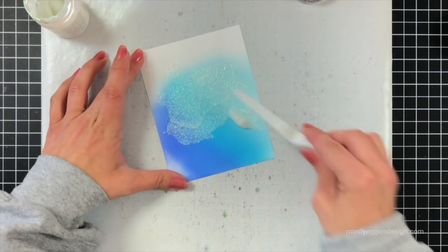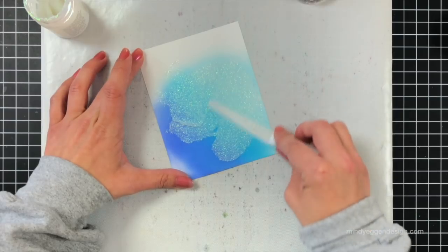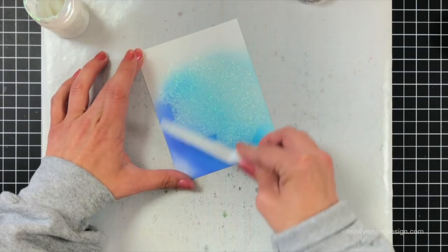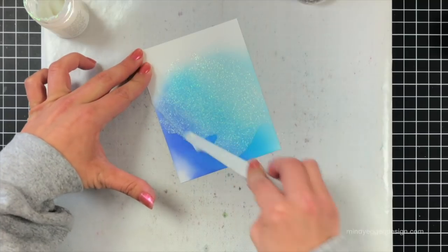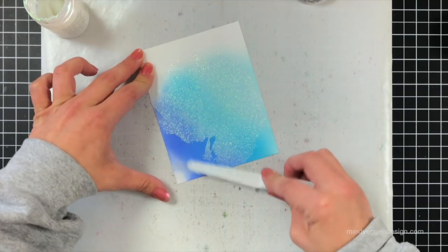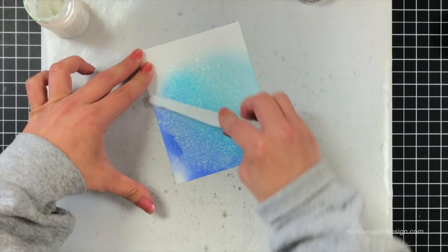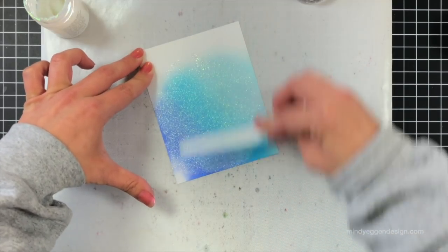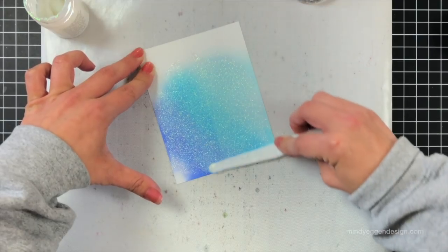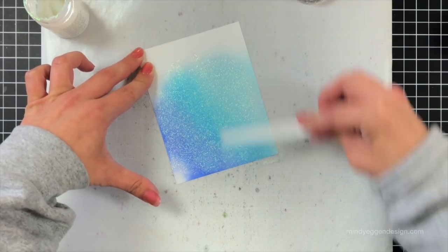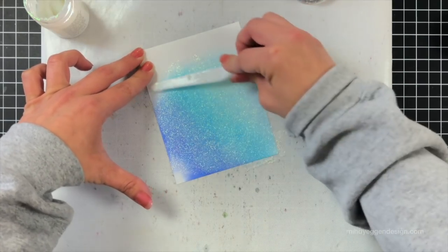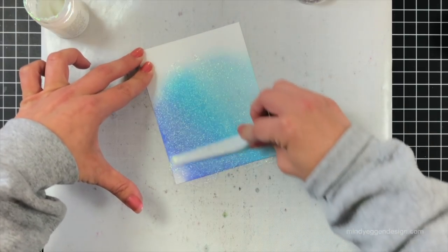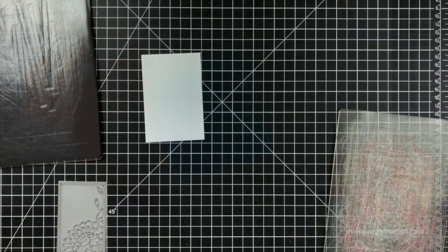One thing you don't want to do is once you've kind of spread that across your cardstock you don't want to dip back in or you don't want to scrape this back into the jar because it will be tinted because of those oxides. So you want to just be aware of that. And then once I have good coverage I'm just going to take that palette knife and smooth it over just kind of like icing on a cake. And once I'm done with this I will wipe down my palette knife right away and I'm going to clean off my mat.